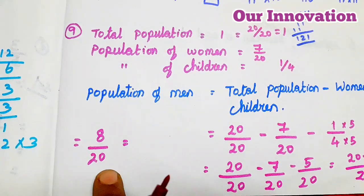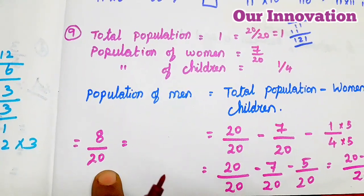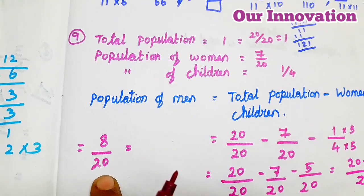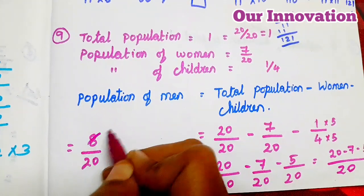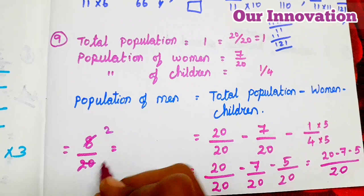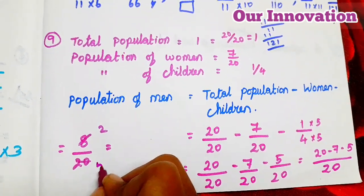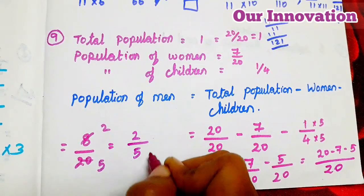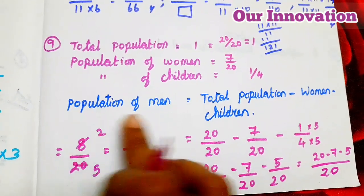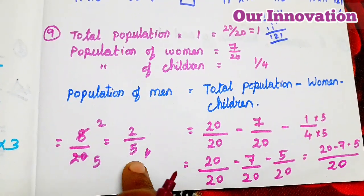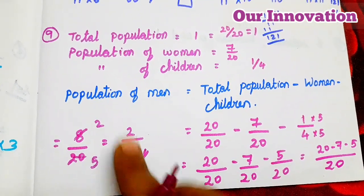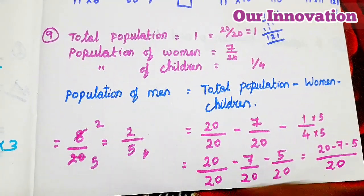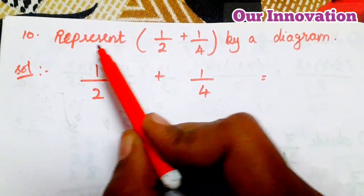Students, now we simplify 8/20. Cancel using the 4th table: 4 × 2 = 8, 4 × 5 = 20. So simplified: 2/5. Therefore, population of men is 2/5.